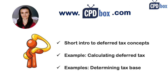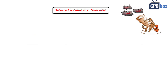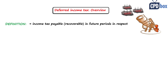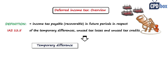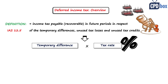So what's the deferred tax? The official definition says that it is an income tax payable or recoverable in future periods in respect of temporary differences, unused tax losses, and unused tax credit. This is set in the standard IAS 12, paragraph 5. It's calculated as temporary difference multiplied with the appropriate tax rate.